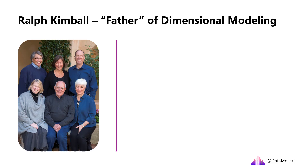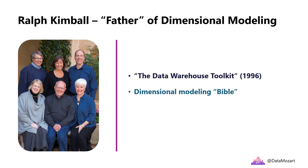Before we explain why dimensional modeling is named like that, let's first take a brief tour through some history. In 1996, a man called Ralph Kimball, together with Margie Ross and his team, published a book called The Data Warehouse Toolkit, which is still considered a dimensional modeling bible. In this book, Kimball introduced a completely new approach to modeling data for analytical workloads: the so-called bottom-up approach.